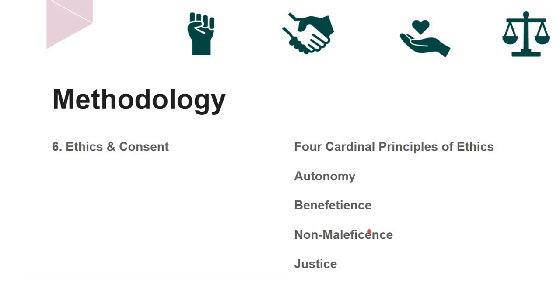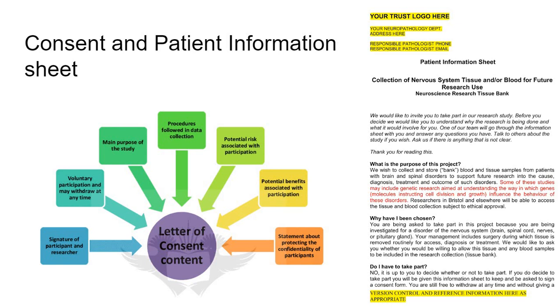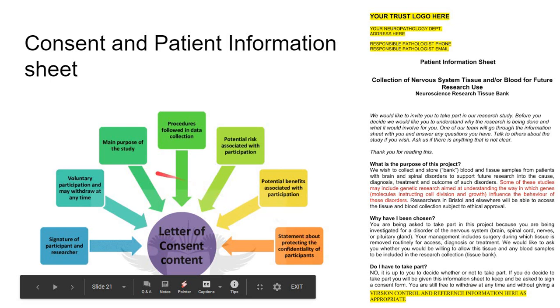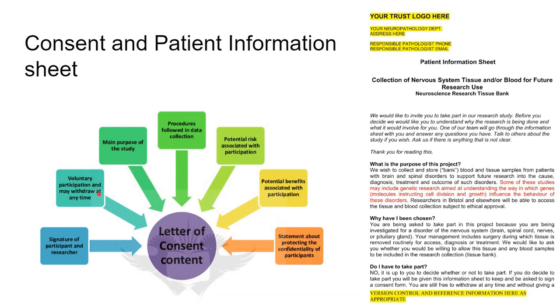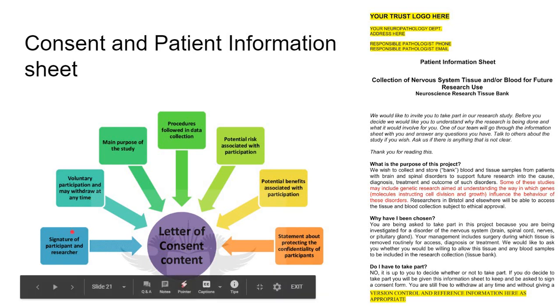When submitting the research proposal, consent and patient information sheets are the two important annexures required for approval. The difference is: consent form is for the researcher, patient information sheet is for the study participant. But the components are same. It should mention the main purpose of the study, procedures followed in data collection, potential risks and benefits associated with participation, statements about protecting confidentiality, that participation is voluntary and participants can withdraw at any time, and it should include signature of the participant and researcher.